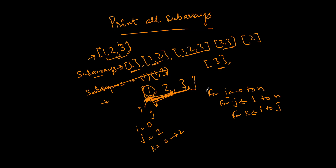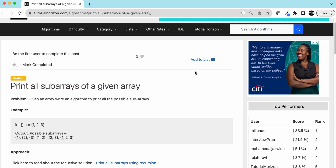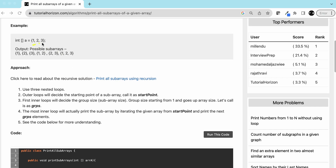Once we are done with [1], [1,2], [1,2,3], i changes to 1. So we fix the starting point at index 1, and now the group size can be 1, giving [2], then group size 2 giving [2,3]. The third loop iterates from the starting point to the group size and prints all possible sub-arrays.